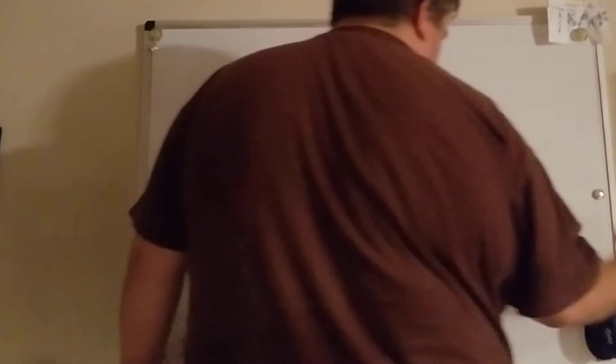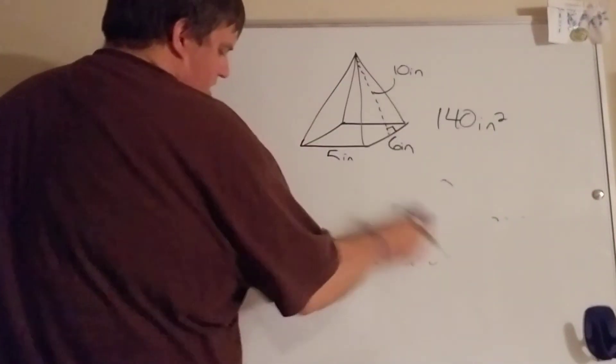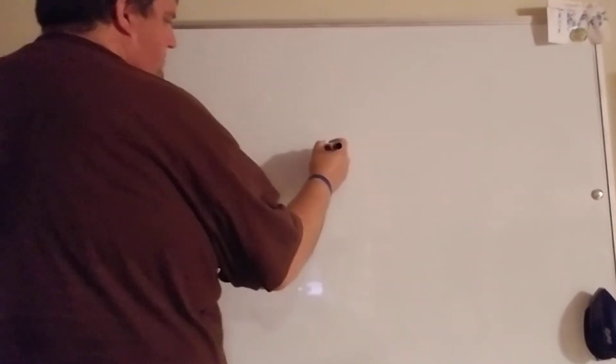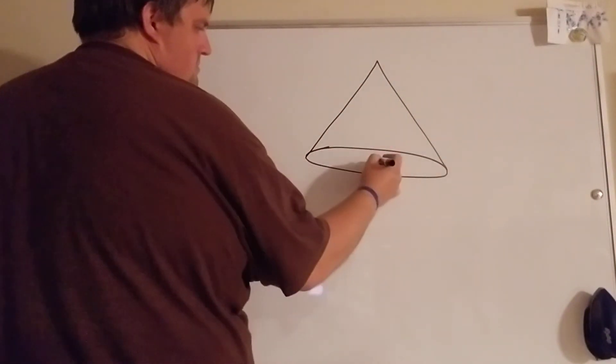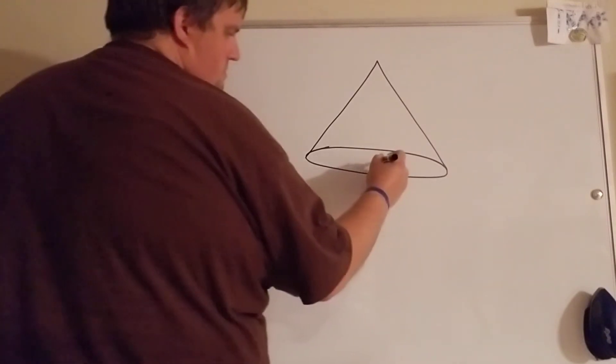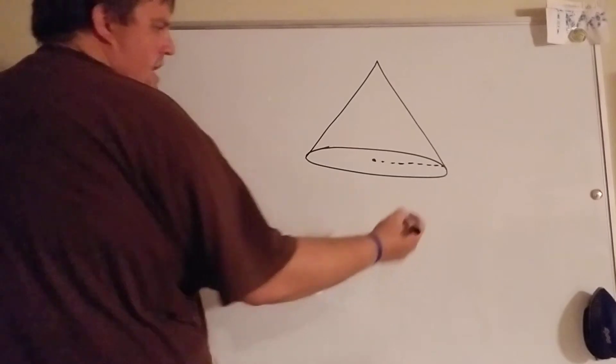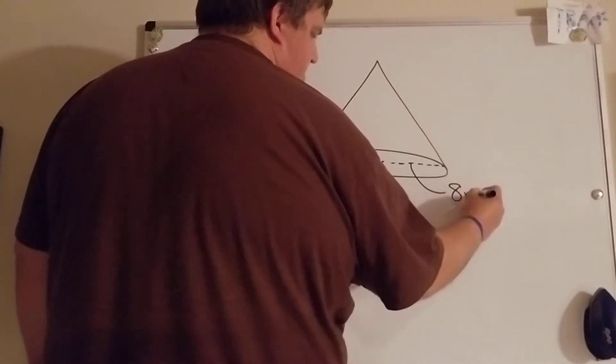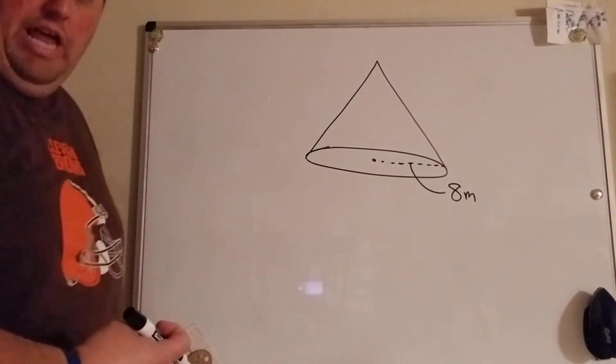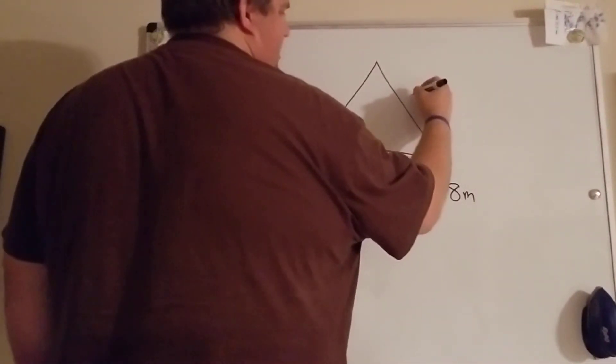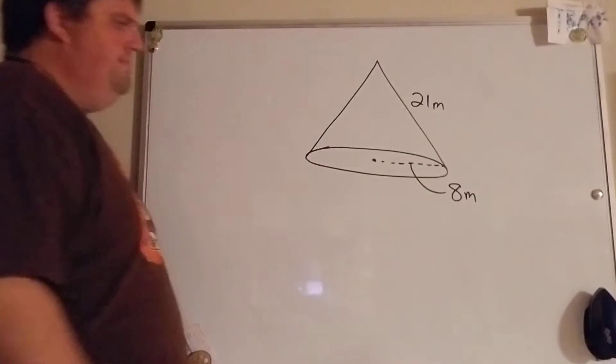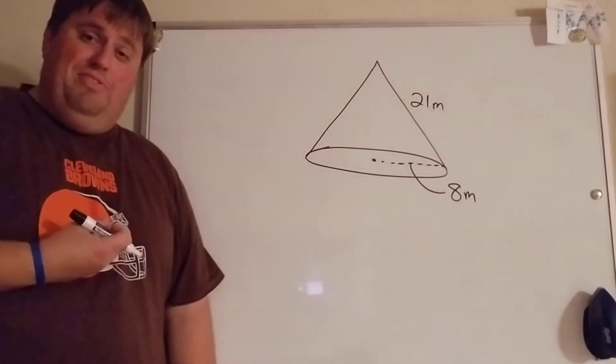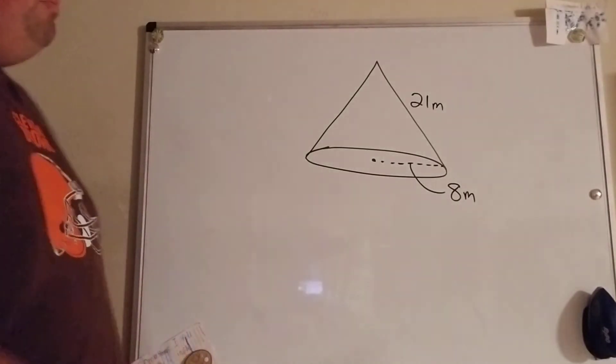Cones however are kind of like the cylinder where they're kind of tricky. So I'm going to show you a cone. Let's say we have a radius of eight meters and just like in the pyramid we're gonna have like a lateral height. So they're gonna give us this side this time and this side is gonna be 21 meters.